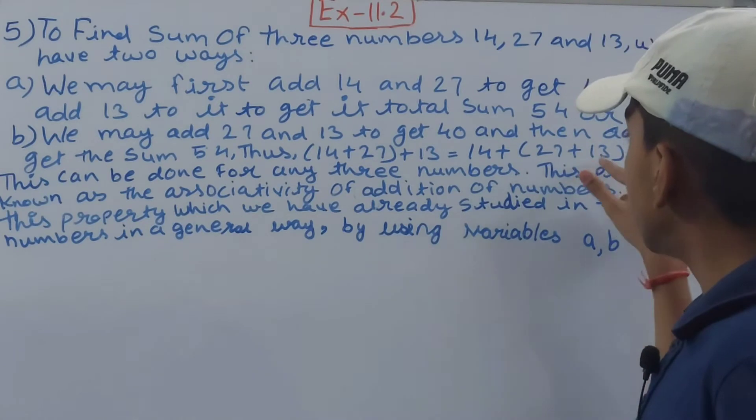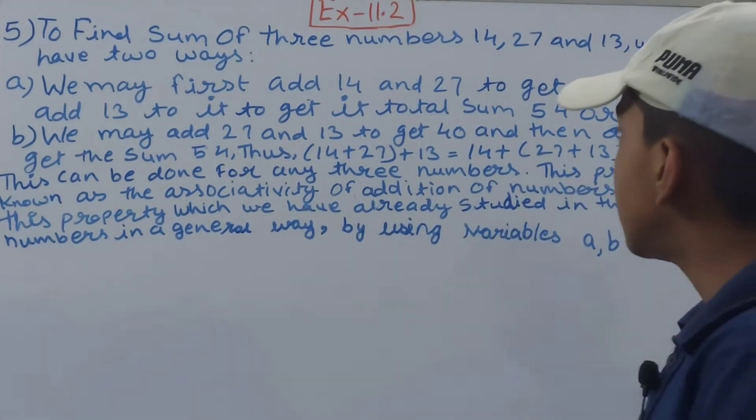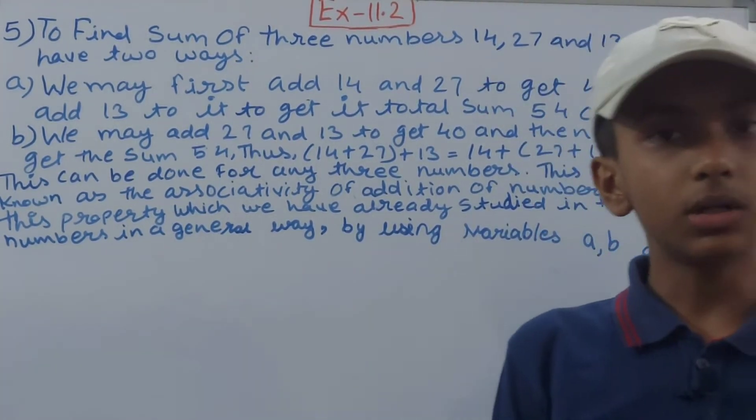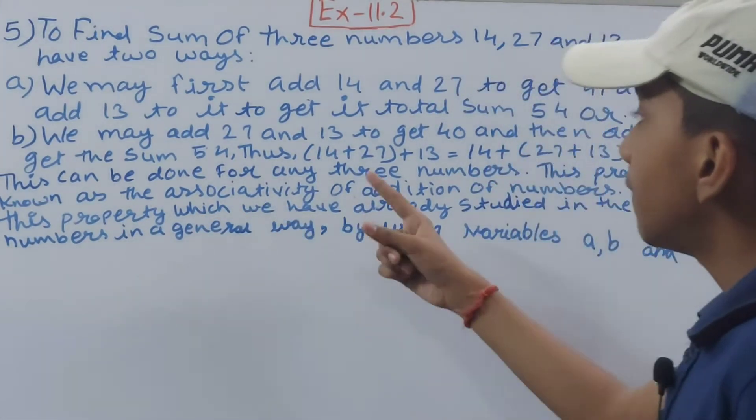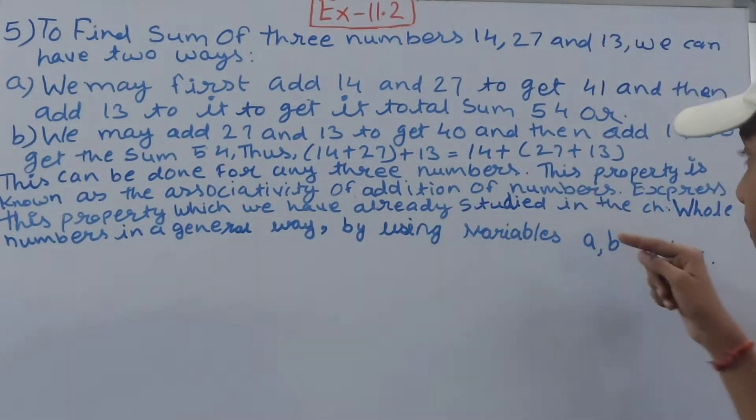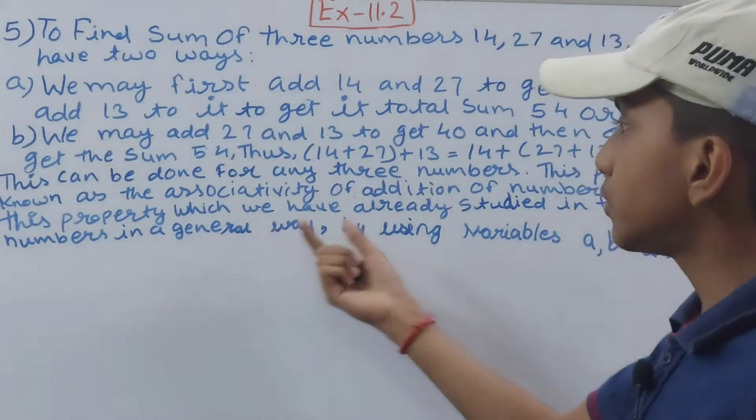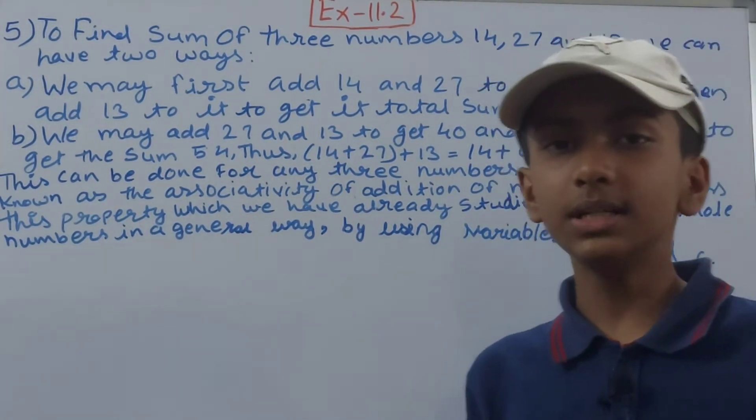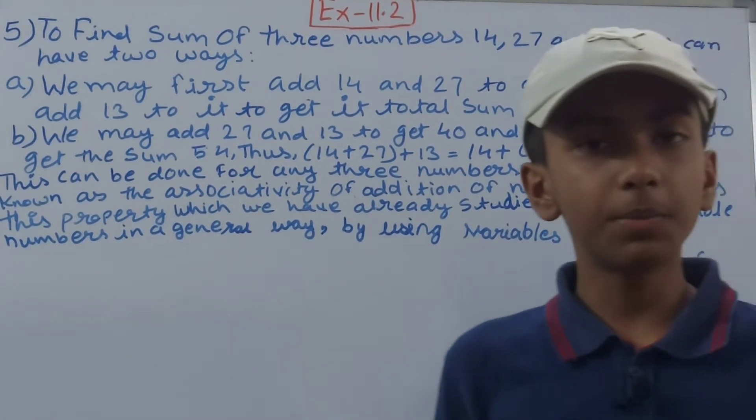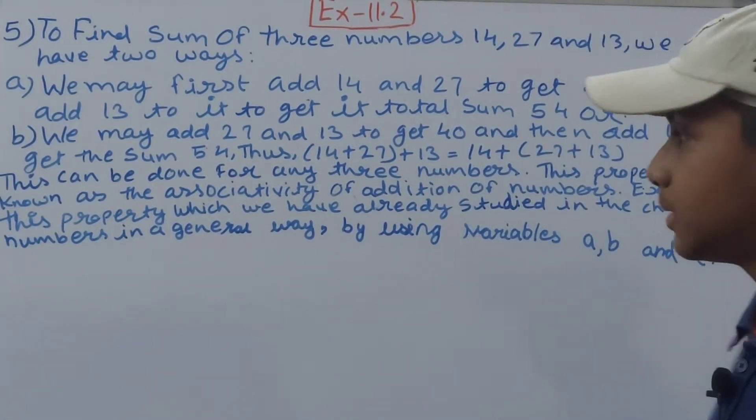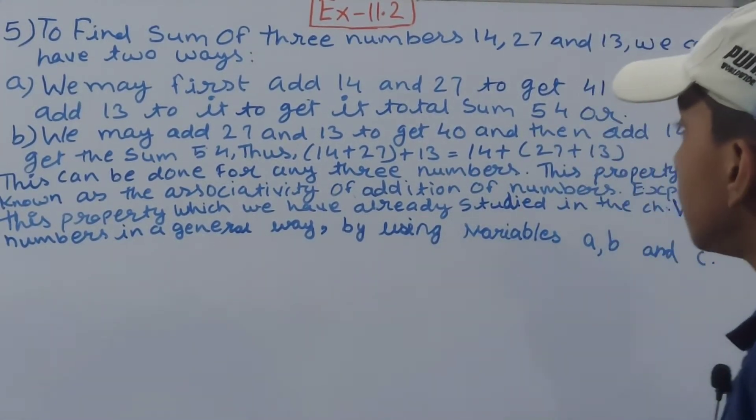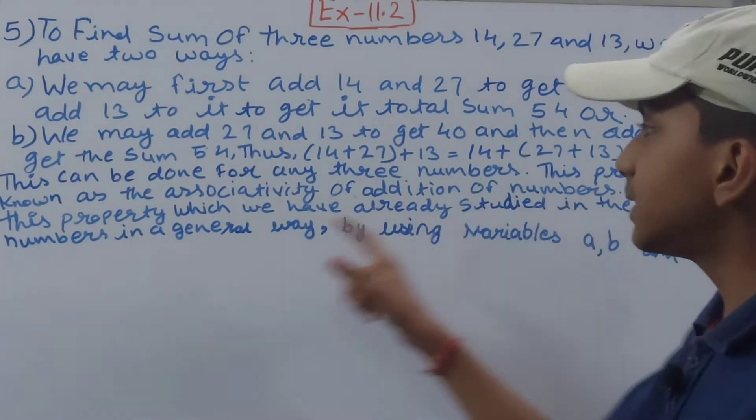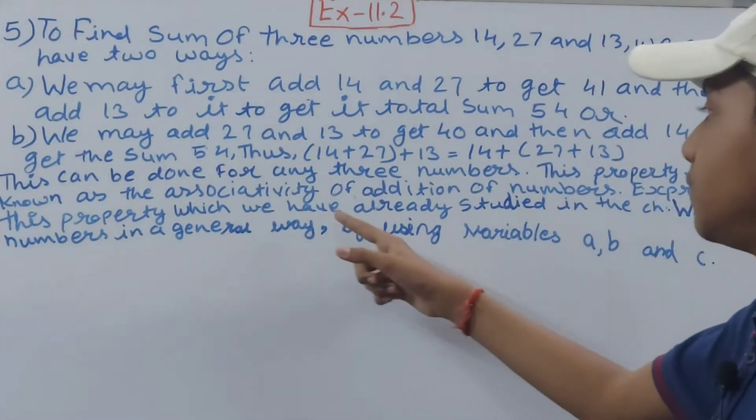This can be done for any three numbers. This property is known as associativity of addition of numbers. Yes, we have studied the associative property of addition. Now, let's express this property, which we have already studied in the chapter on whole numbers, in a general way by using variables a, b, and c.